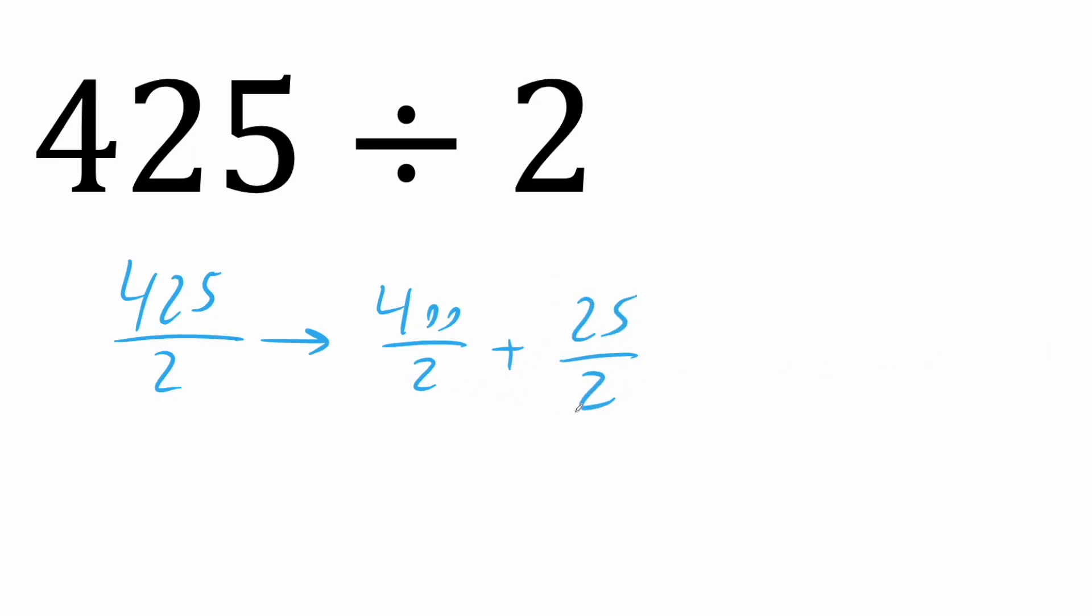With fractions, if our denominator is the same, we then get to add the numerator. So 400 plus 25 is 425. So this and this is equivalent. Now the nice thing about this, 400 divided by 2 would give you 200, and 24 divided by 2 is 12.